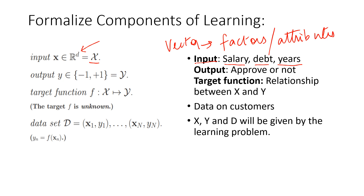The output is denoted by y. In this particular example, I'm trying to figure out whether I should approve or shouldn't approve an application. So this is a yes or no problem. I can encode my outcome as yes or no in terms of plus one and minus one — minus one is no and plus one is yes. This is a categorical outcome, also known as the classification output, because I can classify the outcome into one category or another.